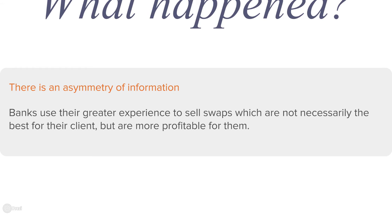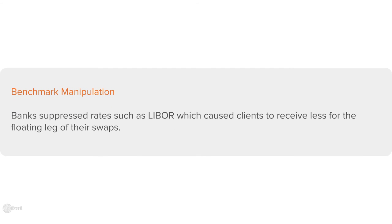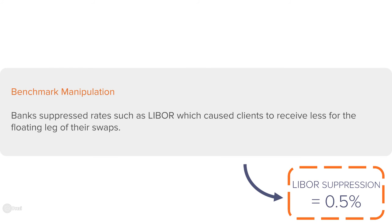This encourages banks, for example, to make swaps more complex. Higher complexity generally translates into less transparent product pricing and larger profits for the banks. When dealing with clients who are classified as sophisticated, banks do not typically owe them a duty of care. They deal with customers at arm's length and try to maximize their profits. Secondly, many of these swaps have been affected by the bank's manipulation of benchmarks. For example, LIBOR suppression from 2007 to 2012 would have damaged any fixed rate payer in interest rate swaps. FIDERES has estimated that during this period, LIBOR suppression may have averaged around 0.5%.